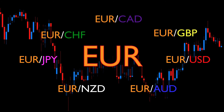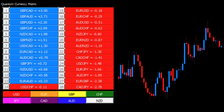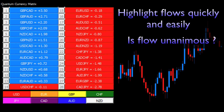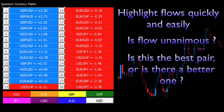This is one aspect of the currency matrix. It's been developed to highlight this flow of currency quickly and easily, to help us make trading decisions, to understand whether flow is unanimous or not, whether the pair we're considering is the best pair to look at, or if there's a better pair. It's also been designed to show us when currency flows are rotating — perhaps out of a major such as the euro dollar, where buying or selling may be waning, but the market is moving more heavily into a cross-currency pair.